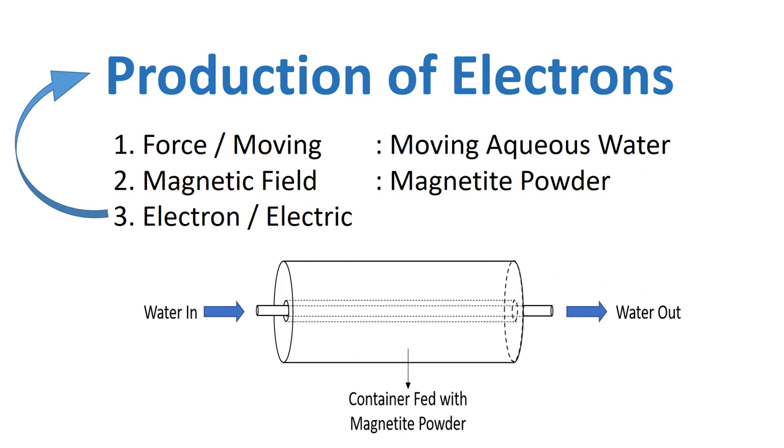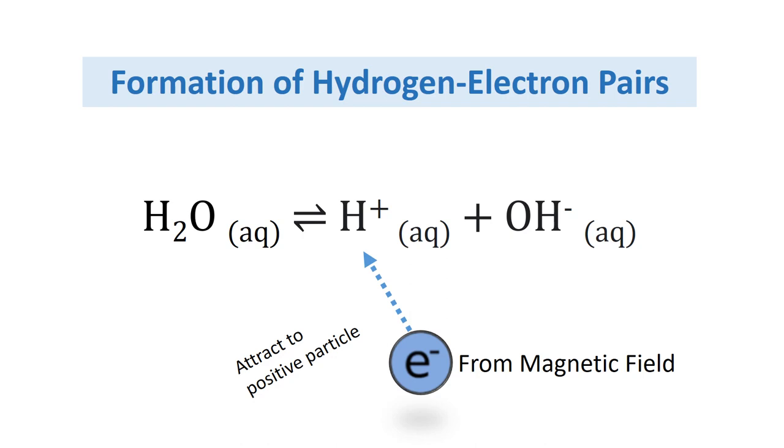In the water, electrons are created because of the principle of induced current. Consider that water can dissociate according to the ionization process. When water is dissociated, the ion of hydrogen and ion of hydroxyl will be the product. However, when the water moves into the magnetic field, electrons will be created. This electron is a negatively charged particle. Negatively charged particles will then be attracted to the positive particle, which is in this case the hydrogen ion. Hence the hydrogen electron pairs form in this manner.